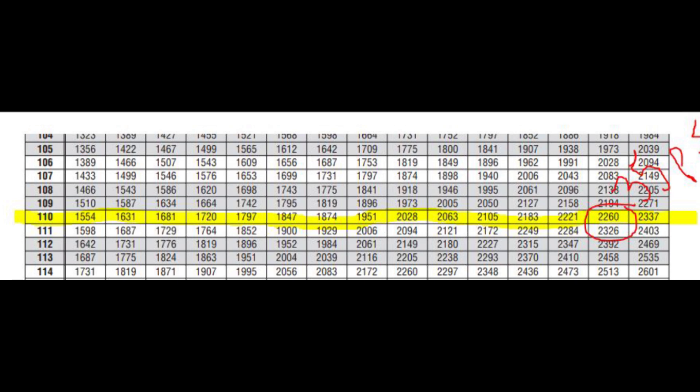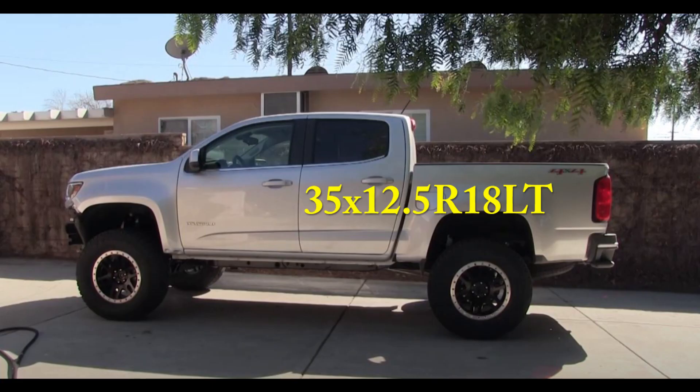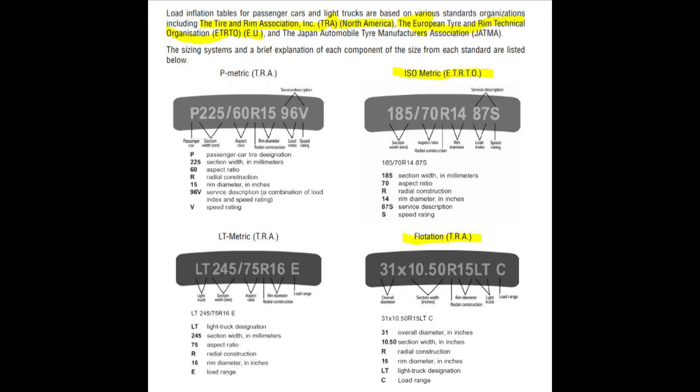Referring back to the load index chart, we know the factory tire has a 2,260-pound capacity at 35 PSI. The new tire has to hold at least that capacity — it can be higher, but you don't want lower. So check the inflation tables. For the new flotation size, we use a different chart: the North American TRA flotation chart.